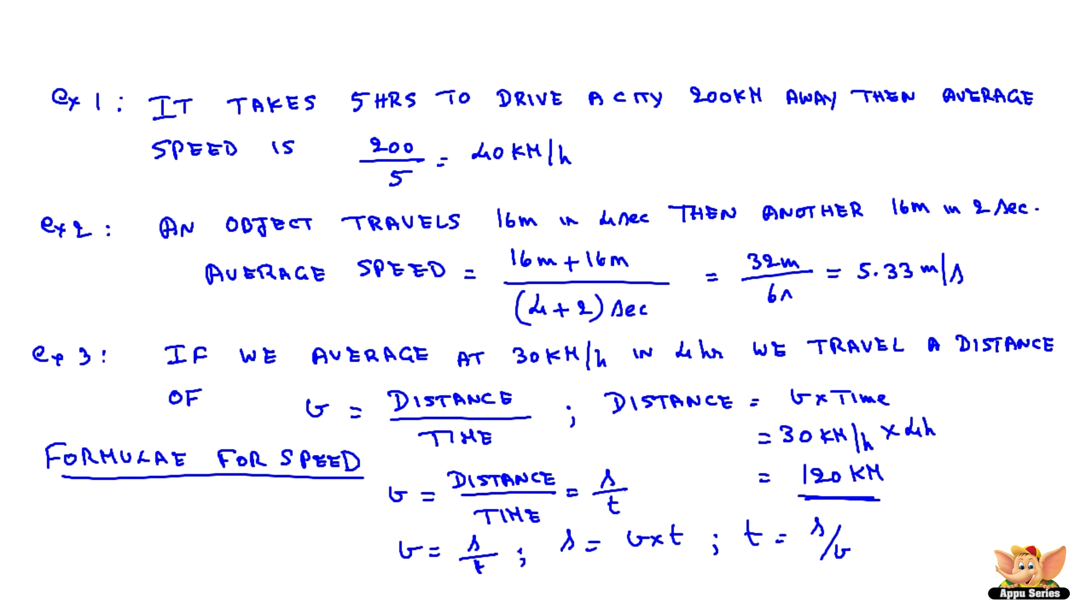If the speed is unknown and distance and time are known, we can calculate speed using this. If speed and time are known, distance can be calculated. If speed and distance are known, we can calculate the time that it takes to travel. All these three formulas are used extensively in speed and motion problems.